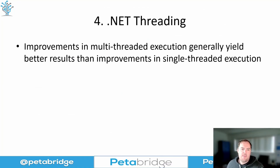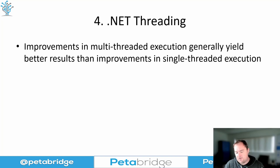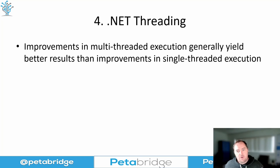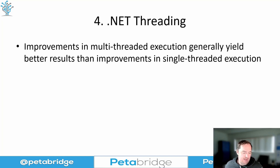Number four: .NET threading. Generally speaking, if you're trying to get real improvements in your application's performance, fixing how you work with multi-threading — and this also includes async/await — is generally going to yield more significant results with less effort than trying to improve single-threaded execution. When you see benchmark infographics or YouTube videos about the fastest way to iterate through a collection, they're all talking about single-threaded execution. That's a popular topic because it's really easy to measure — BenchmarkDotNet and similar tools make it very quantifiable.